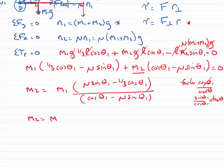So M2, that's the final step, equals M1 times (mu tan theta 1 minus one-third) divided by (1 minus mu tan theta 1). That's my final expression. I've done this algebraically so I can now put numbers in.